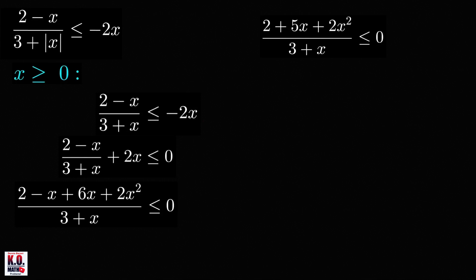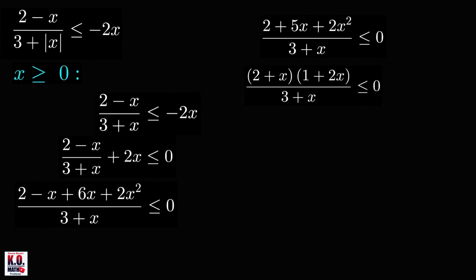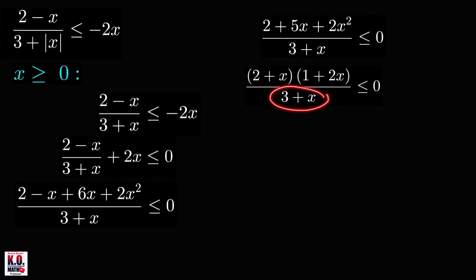We can solve this inequality using a sign chart. If we factor the numerator, we'll get 2 plus x times 1 plus 2x. So the values of x that will make our numerator equal to 0 are negative 2 and negative one-half. And the value of x that makes the denominator 0 is negative 3. So we can draw our sign chart this way.